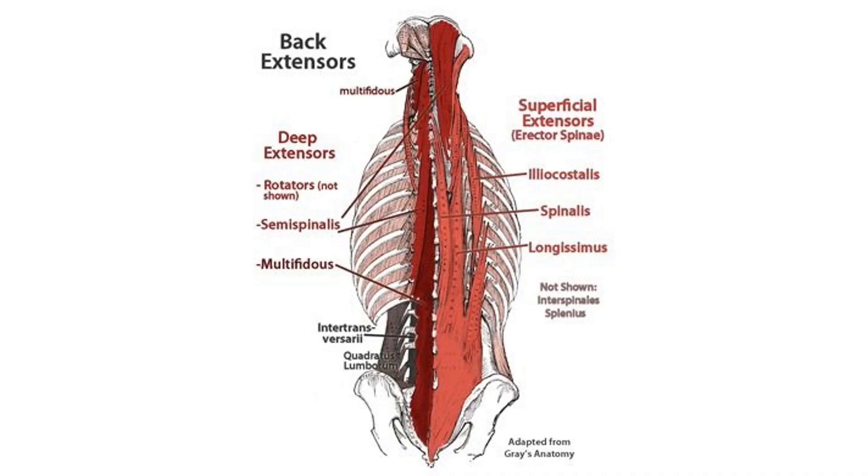Thing number one is the action of the muscles, in particular but not only the spine extensors. Thing number two is the environmental pressure.